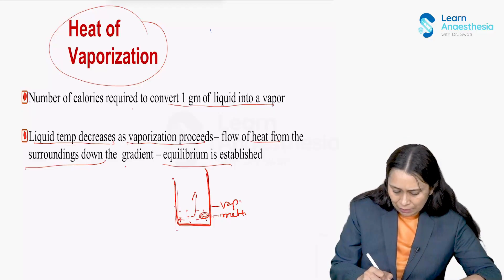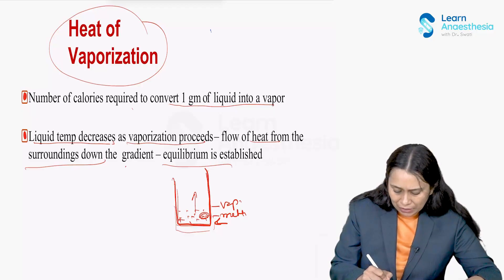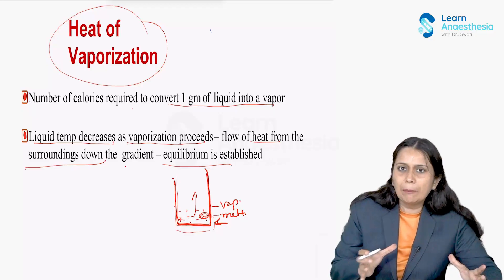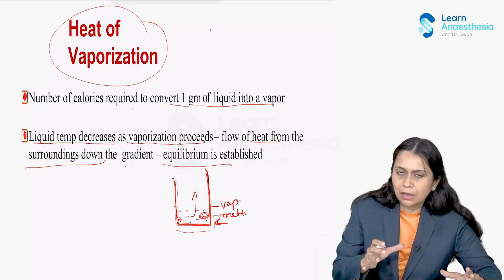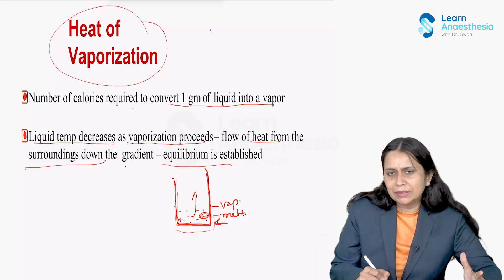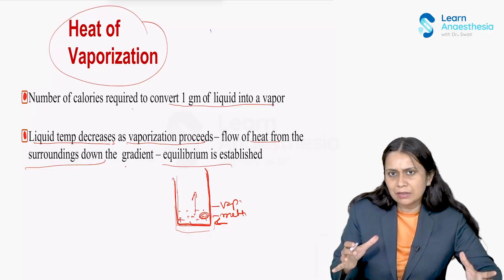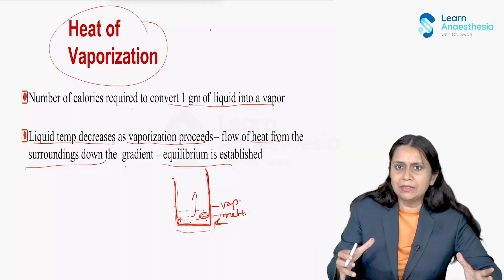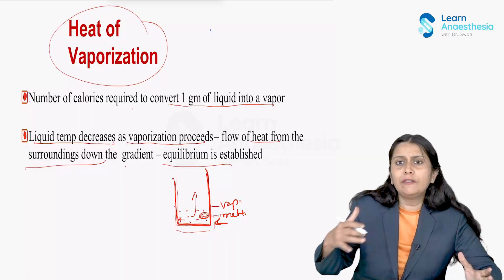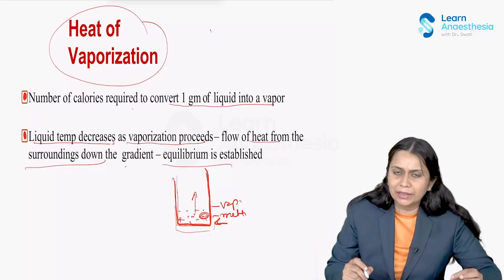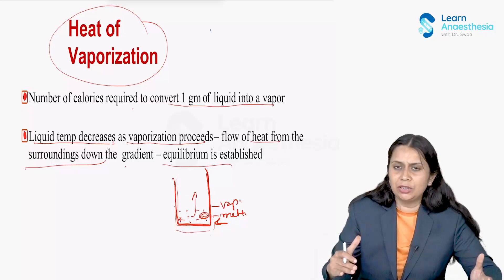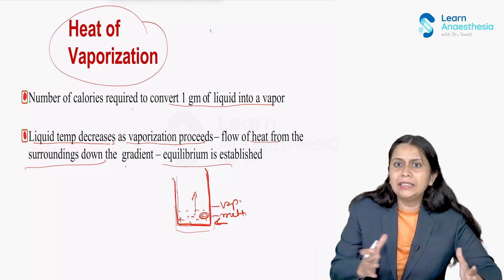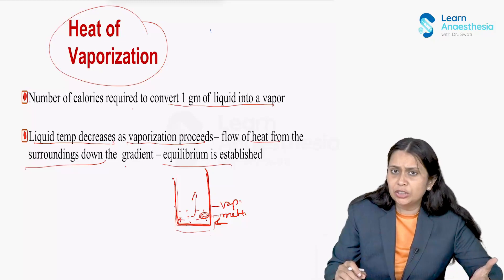The equilibrium is achieved by maintaining a heat bath — either by external supply of heat or by the metal which makes up the vaporizer. This heat loss is compensated, but only at a finite level. When cooling happens and temperature fluctuates, there should be a compensatory mechanism to compensate for this heat loss so that the vapor output in the total gas is not affected. Because of this heat of vaporization, we need something called temperature compensation in designing the vaporizer.